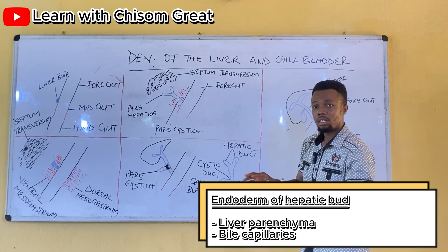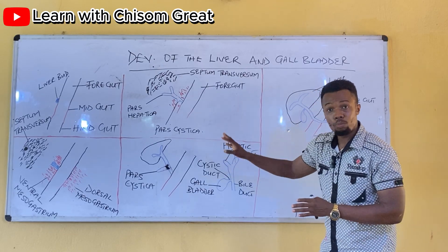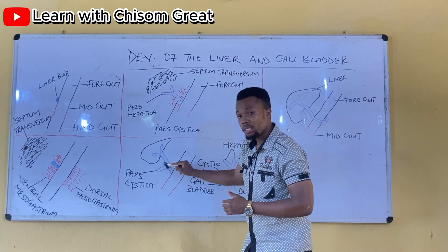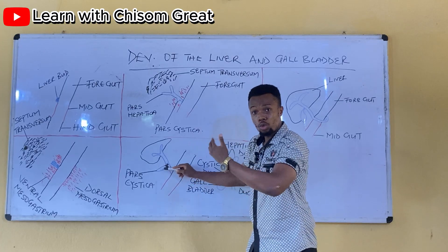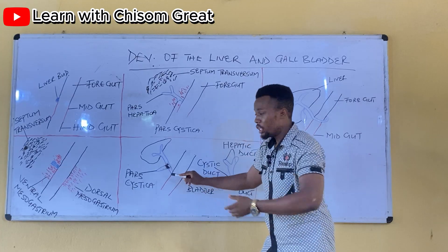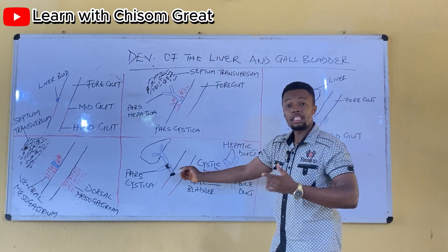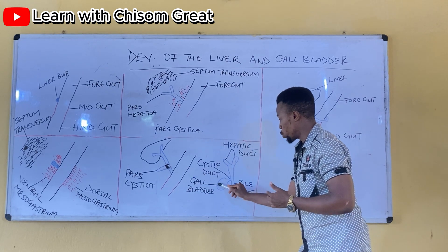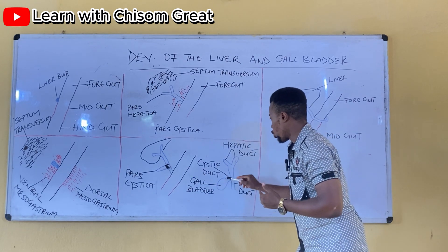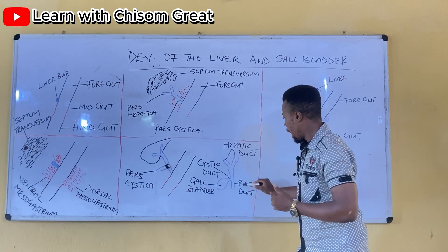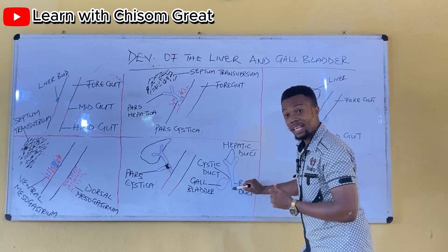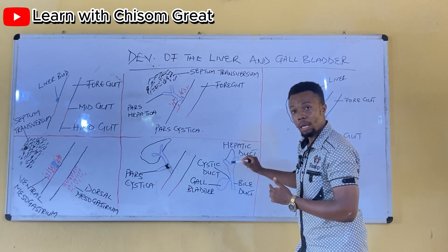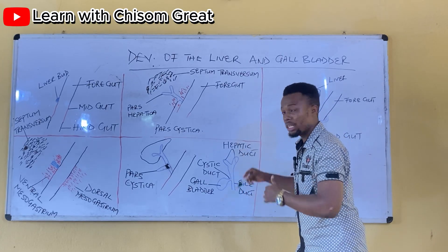The endoderm of the hepatic bud gives rise to the parenchyma of the liver and also the bile canaliculi. Coming down to the pars cystica, the pars cystica begins to grow and eventually gives rise to the gallbladder and also the cystic duct. And this hepatic bud remains the bile duct.